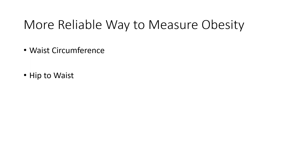Waist circumference and hip-to-waist ratio — BMI gets a lot of flack, but BMI is not the worst measure. The argument we get is that a football player could be technically overweight or obese by their BMI but actually healthy because they have a lot of muscle mass. Now, that's pretty rare. When we go into BMI over 40 — severe obesity, class two or class three — that's probably not muscle mass. Especially at a BMI of 50, which is where the populations I treat fall, BMI is actually a pretty accurate measure.